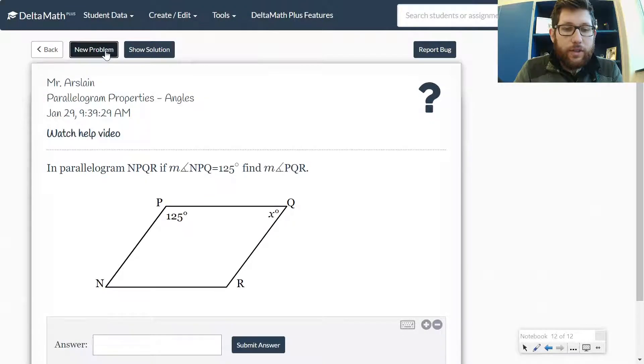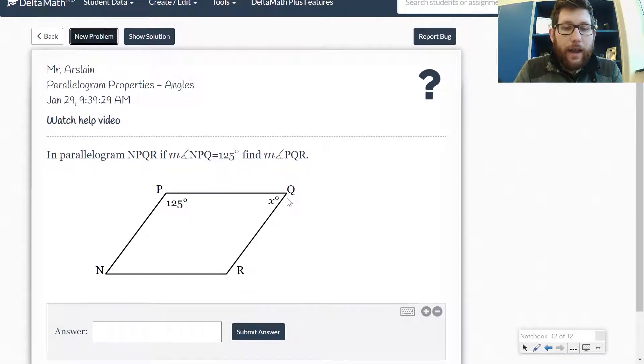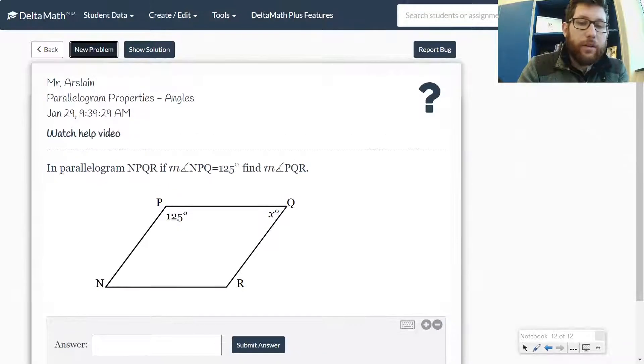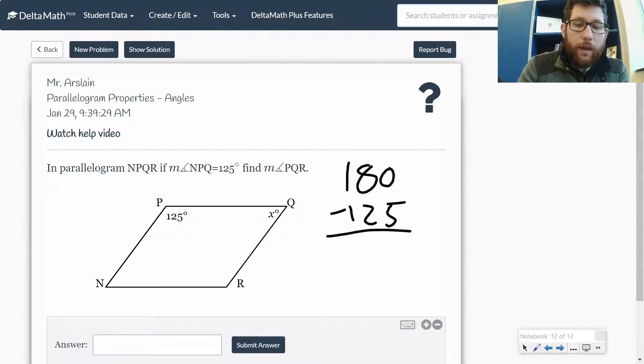So here's another one. I've got angles next to each other. So what am I going to do? I'm going to do 180 minus 125. And I get 55. So that should be pretty easy.